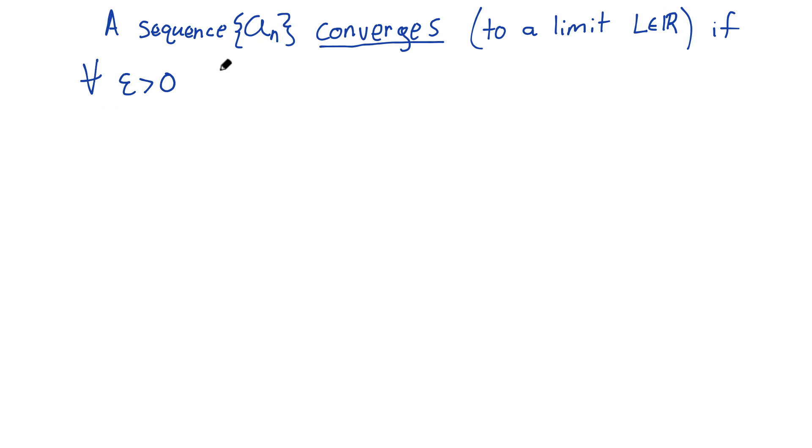For all epsilon greater than zero, there exists some natural number capital N such that the absolute value of the difference of our sequence and its limit is less than epsilon for every n greater than N. Your class might use greater than or equal to; I'll just stick with strictly greater than.